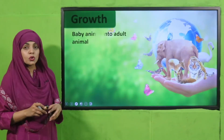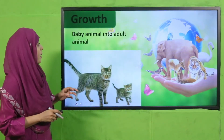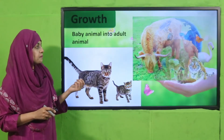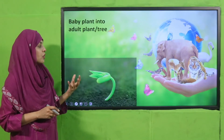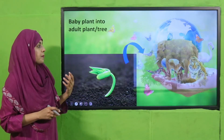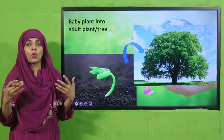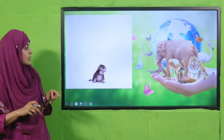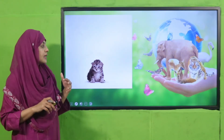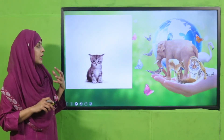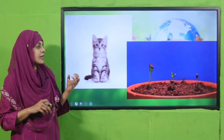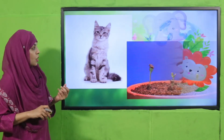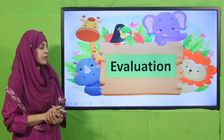Both plants and animals show growth. Baby animals grow into adult animals, and baby plants grow into trees and adult plants. You can see a kitten grows into an adult cat, and in the next picture, seeds grow into seedlings and then into an adult plant.